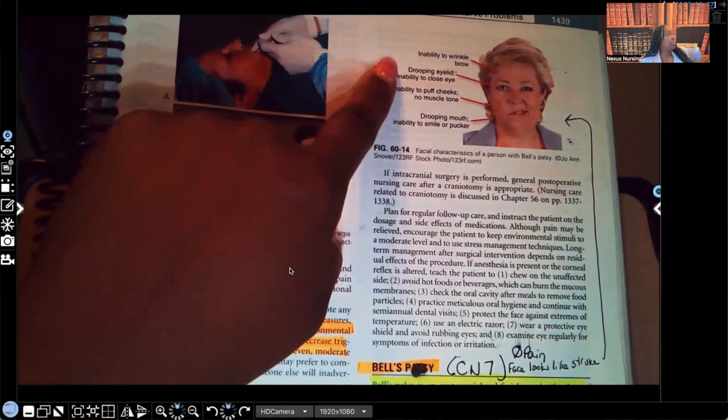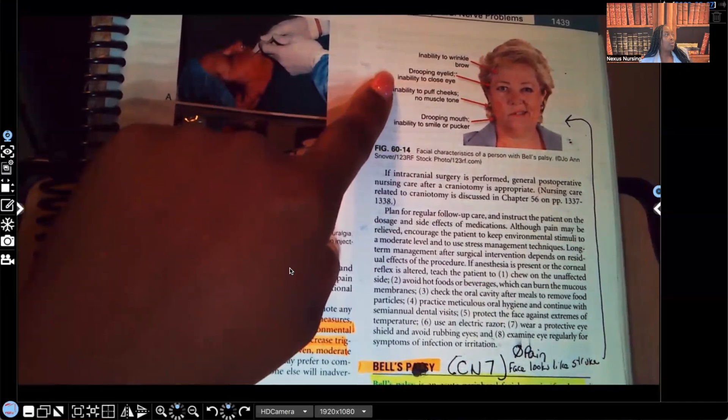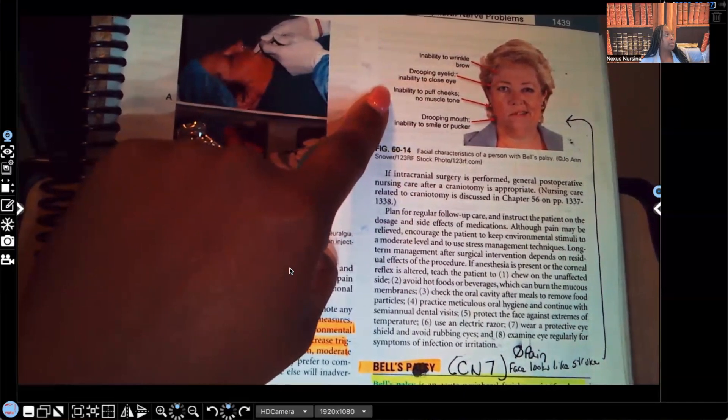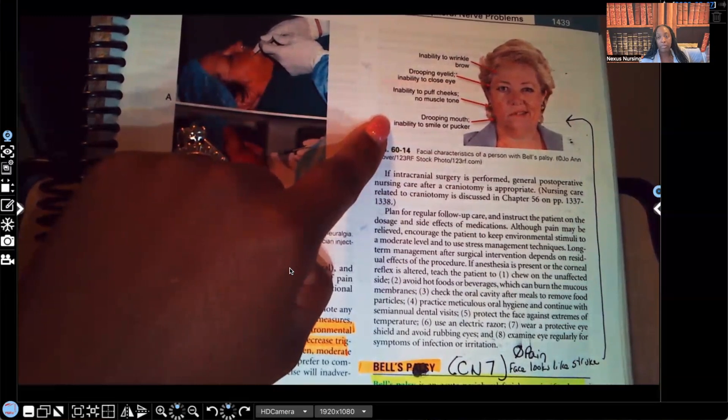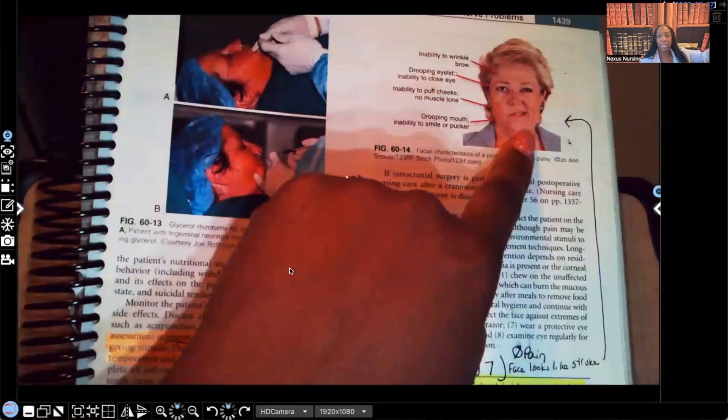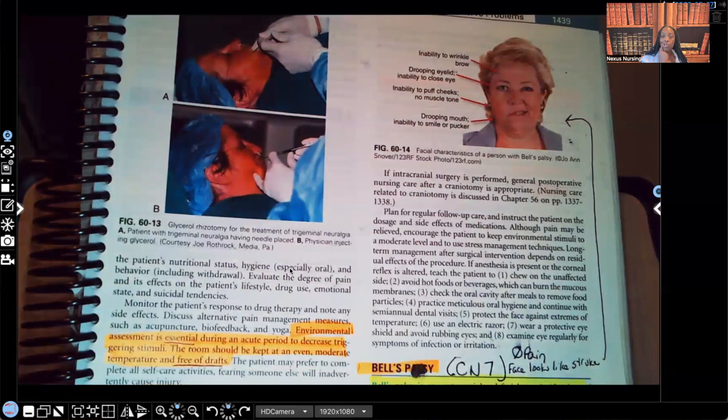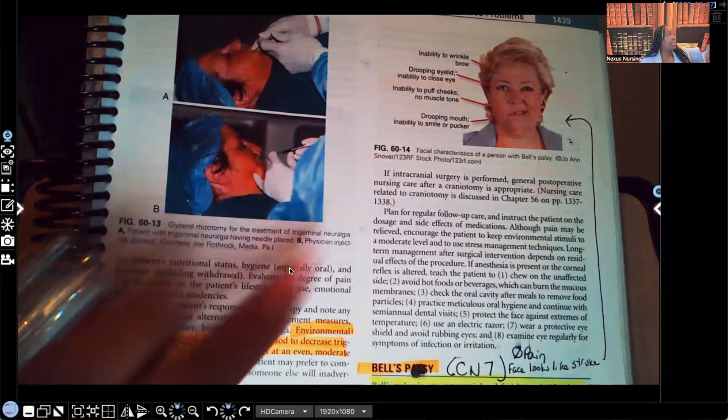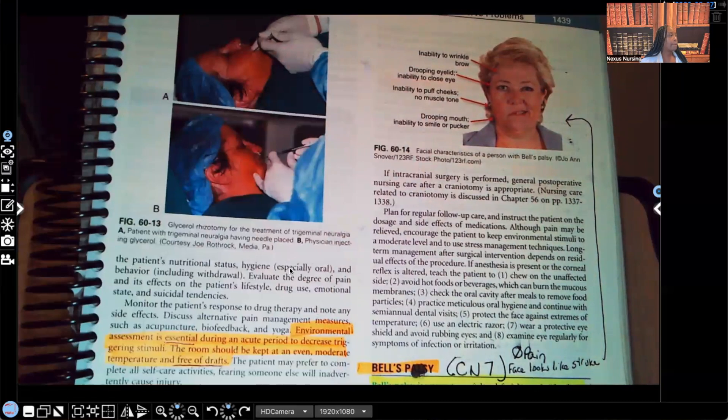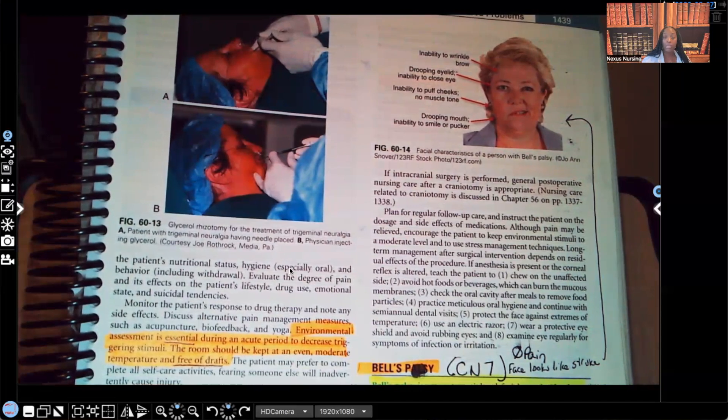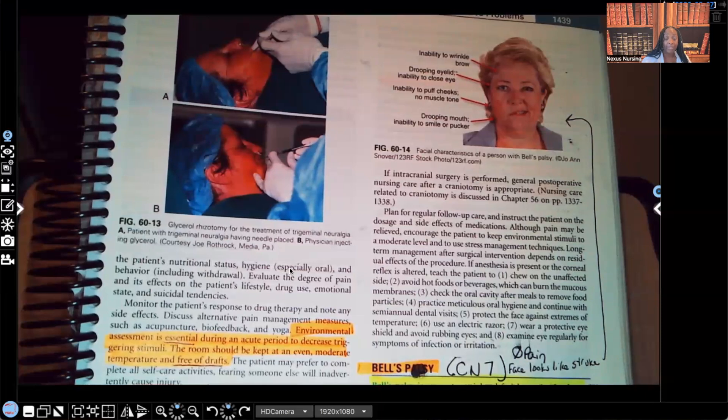Inability to wrinkle their brow because of that muscle weakness. Drooping eyelid because of that muscle weakness. Inability to close the eye because of that muscle weakness. Inability to puff out cheeks because of that muscle weakness. Drooping mouth because of that muscle weakness. If you notice on the other side, she can lift, she can smile, her eyes, right? But on this side here, because of the muscle weakness, it's causing all of this. Remember, this is one-sided and the patient does not feel pain.